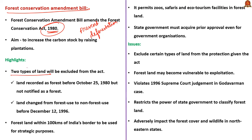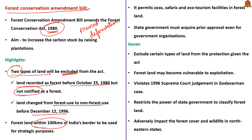The Act says two types of land will be excluded from its provisions: firstly, land recorded as forest before October 25, 1980 but not notified as forest; and secondly, land changed from forest use to non-forest use before December 12, 1996. The amendment also allows forest land within 100 kilometers of India's border to be used for security or strategic purposes. The original Act of 1980 allows only certain non-forest activities like establishing checkposts, fencing, and bridges. But the amendment act permits zoos, safaris, and ecotourism facilities in forest land. However, the state government must acquire prior approval even for government organizations.